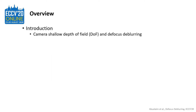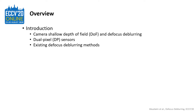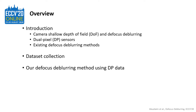Here is the overview of the talk. I'll begin with an introduction where we first talk about camera shallow depth of field and how the defocus blur is formed. Then we will talk about dual pixel sensors and how they are related to defocus blur. After that, we introduce existing defocus de-blurring methods and place our work in regard to prior work. Next, we present our dataset along with the novel approach we followed for data collection. Our proposed defocus de-blurring method using dual pixel data will be presented later, followed by our experiments and results. And at the end, we conclude our work.